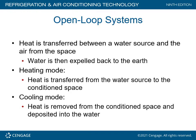In the open loop system, heat is transferred between the water source and the air from the space. Water is then expelled back to the earth. In the heating mode, heat is transferred from the water source to the conditioned space. In the cooling mode, heat is removed from the conditioned space and deposited into the water.